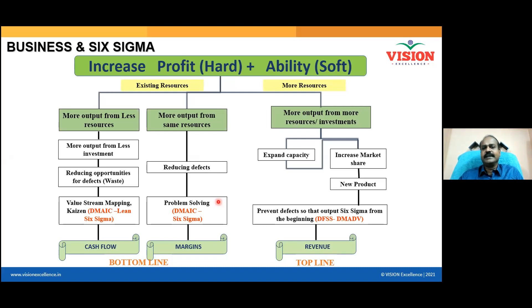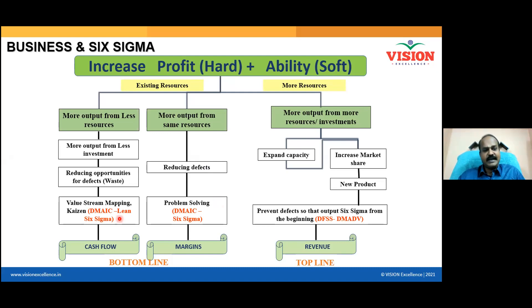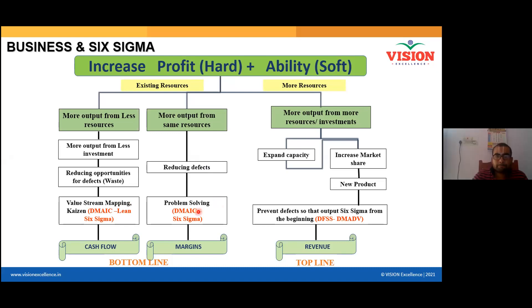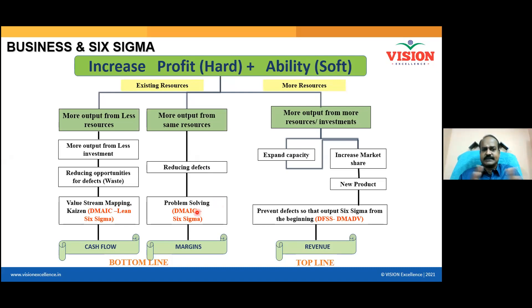When you want to increase output while also reducing resources, that is called a Lean Six Sigma project. On one side output is increasing, and on the other side the input going into the process is also decreasing. A combination of lean and Six Sigma is called a Lean Six Sigma project. When you reduce defects, your profit margin will improve.